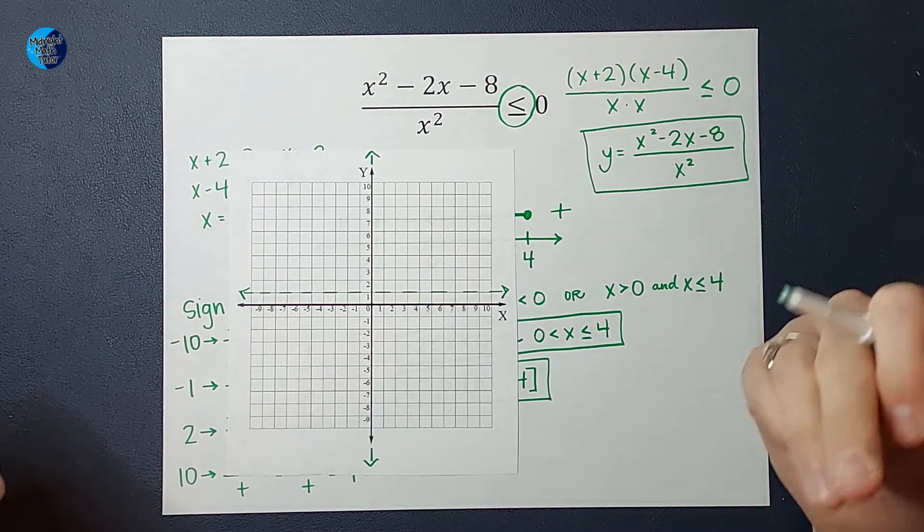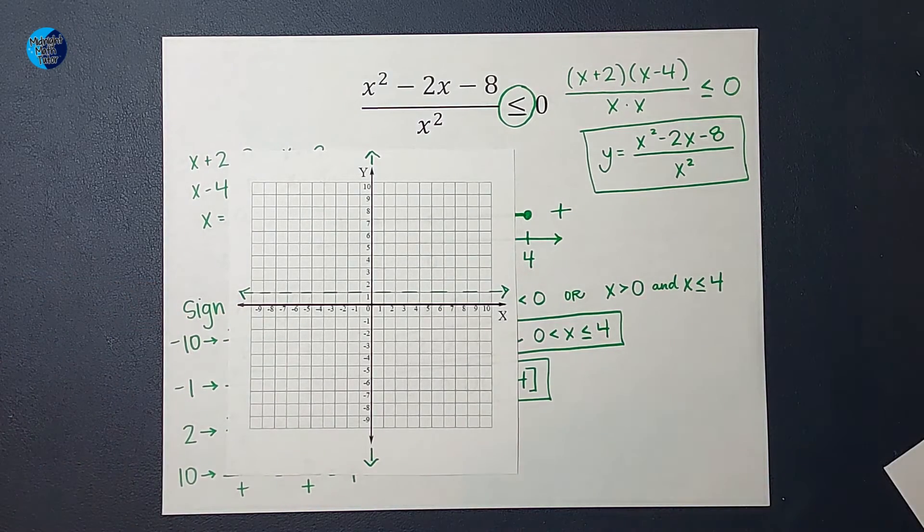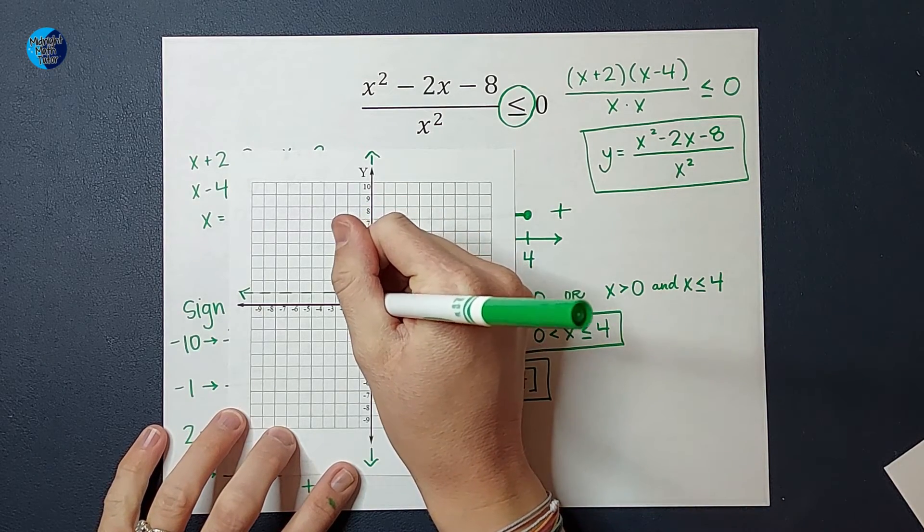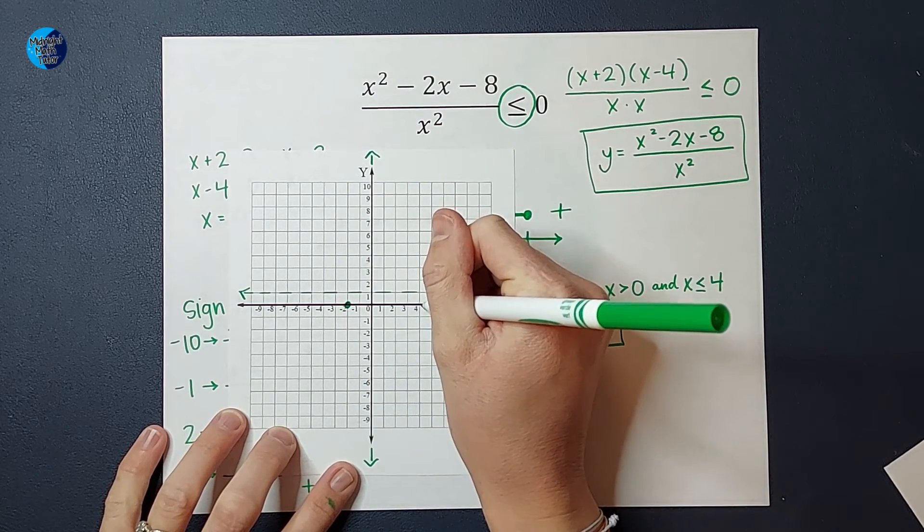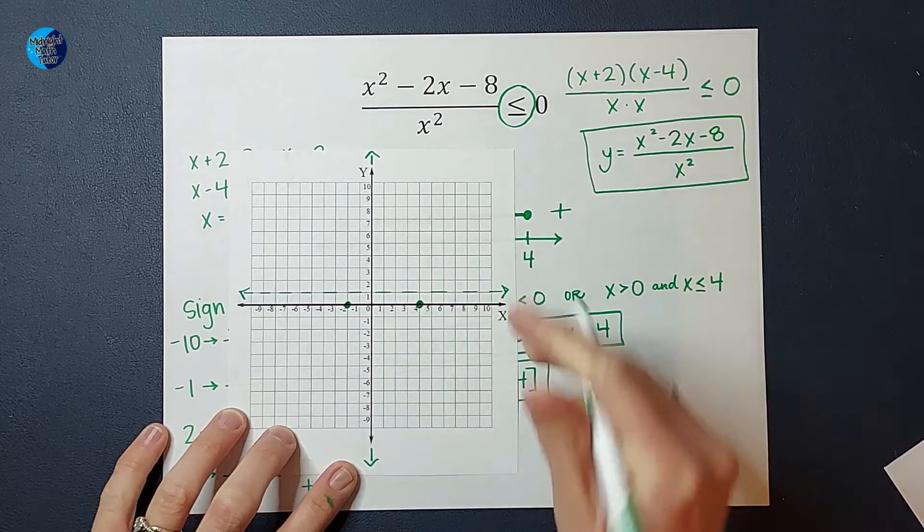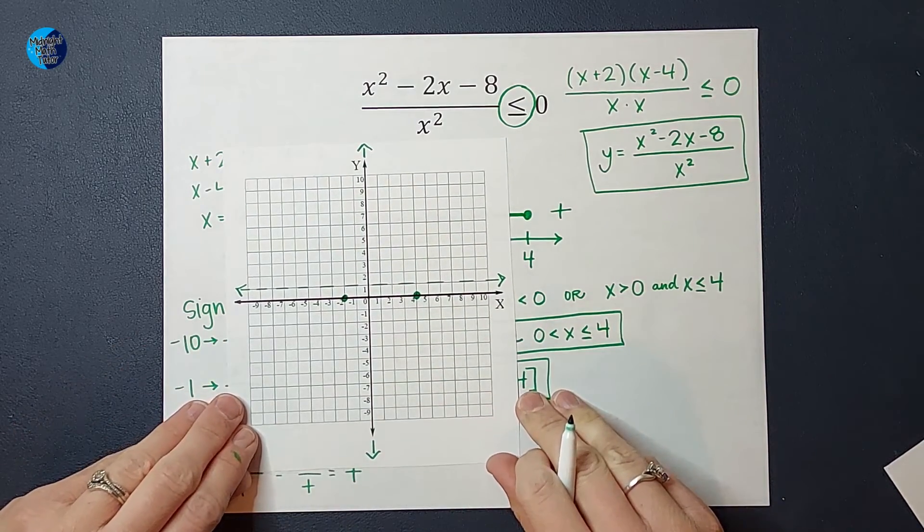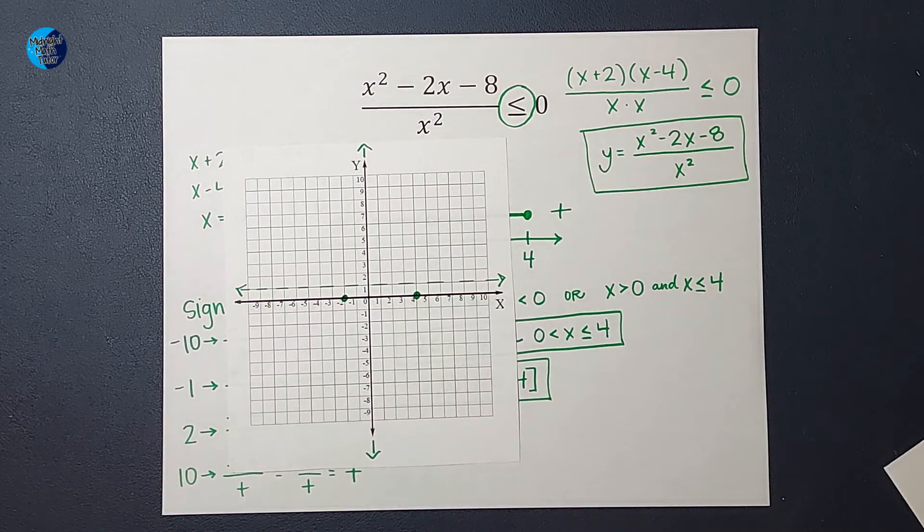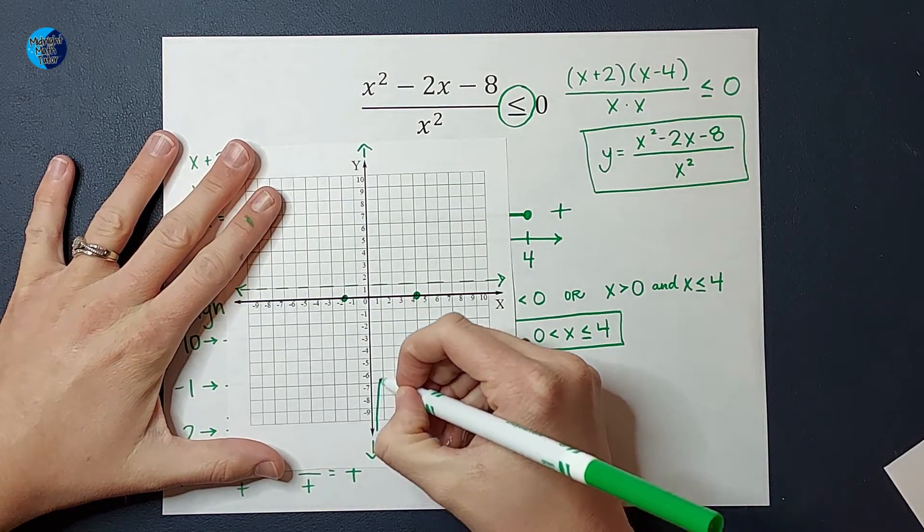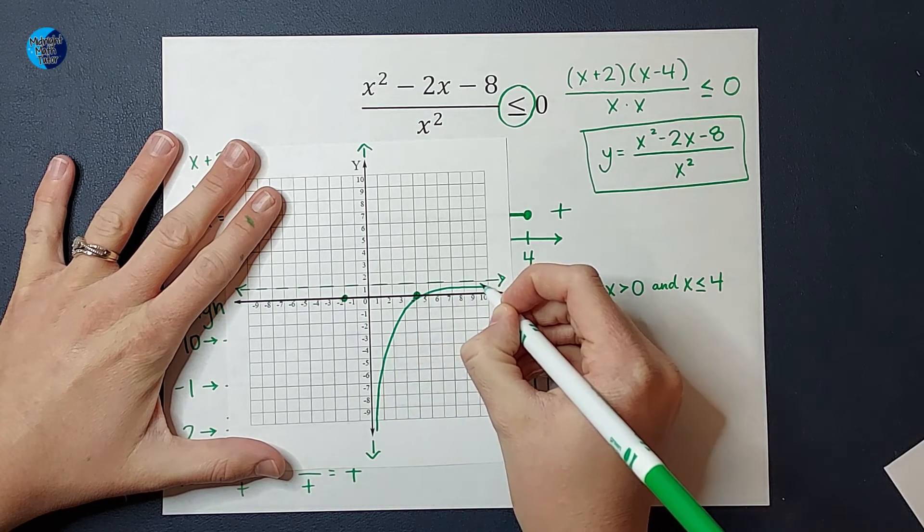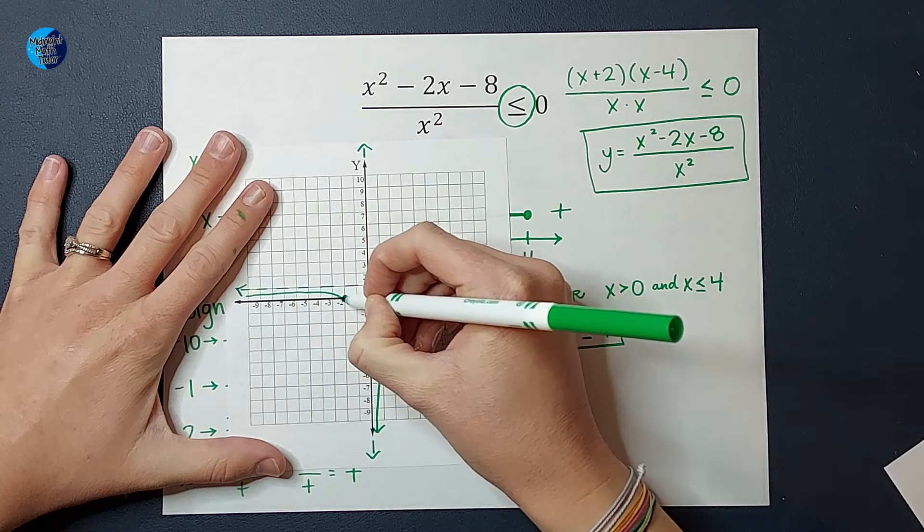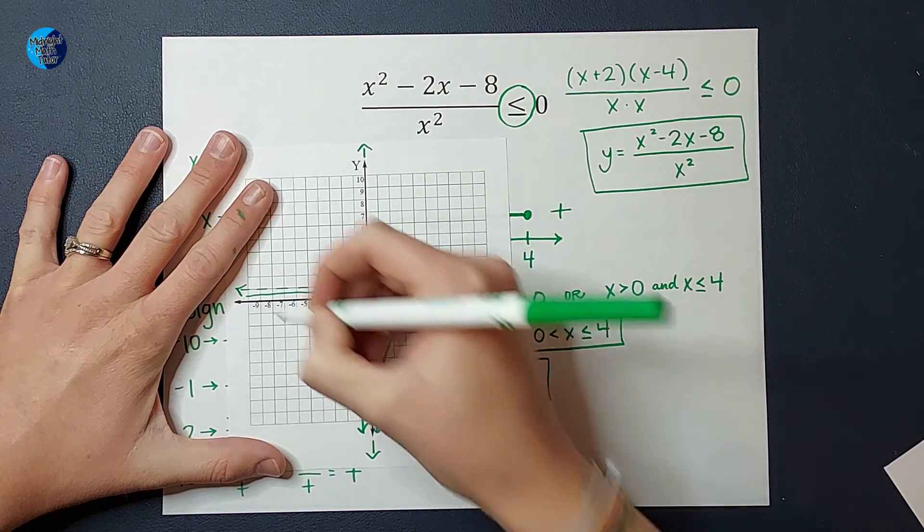The next thing I would do would be to find my x-intercepts. And I would figure out that they are at negative 2 and 4. Then applying what I know about asymptotes and about functions and things, I would figure out that this graph looks something like this. Here we go. Looks something like that. You're like, great, who cares? Let me tell you why you care.